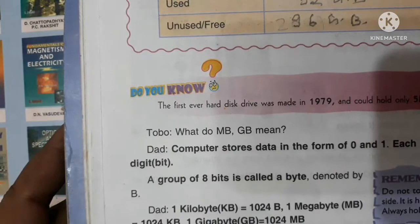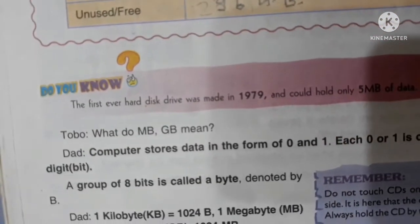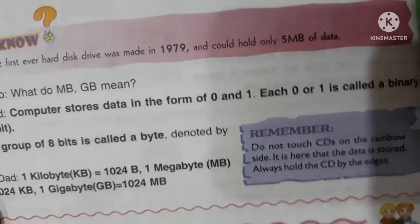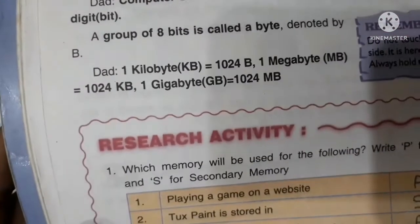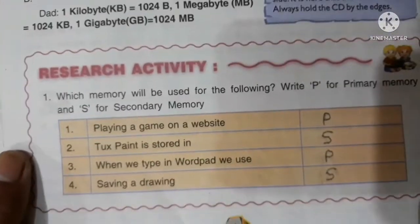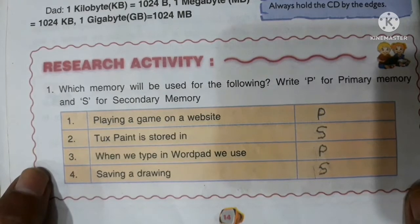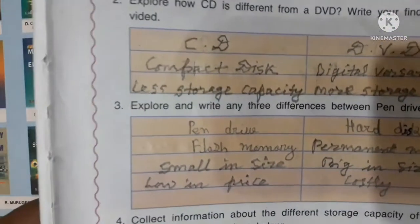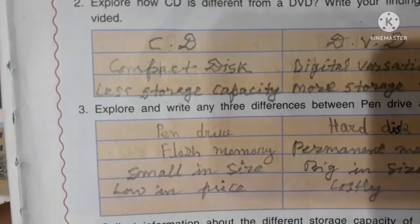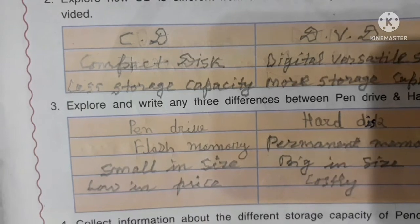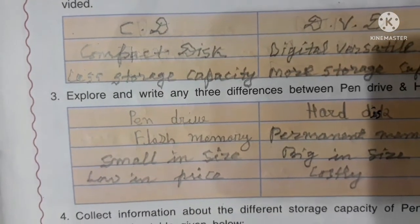The first ever hard disk drive was made in 1956 and could hold only 5 MB of data. Activity: playing a game on a website is P (processing); text painted in Paint is stored as S (storage); when we type in WordPad we use P; saving a drawing is S. Storage devices include CD (Compact Disc) and DVD (Digital Versatile Disc) — CD has less storage capacity, DVD has more.